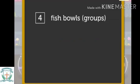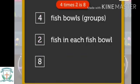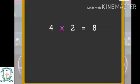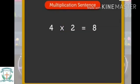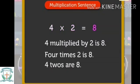Let us do this multiplication operation in an easier way. There are four fish bowls; each bowl has two fish in it. Now, four times two is eight, so there are eight fish in all. Using the multiplication symbol, we write this as a multiplication statement. It can be read as: four multiplied by two is eight, or four times two is eight.